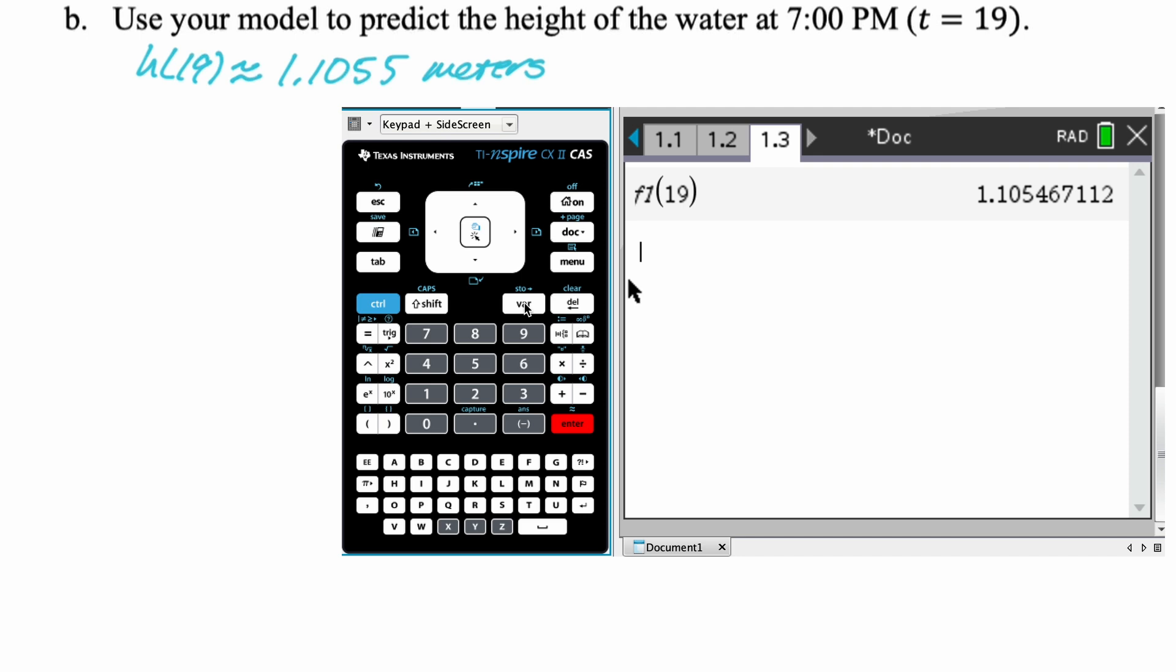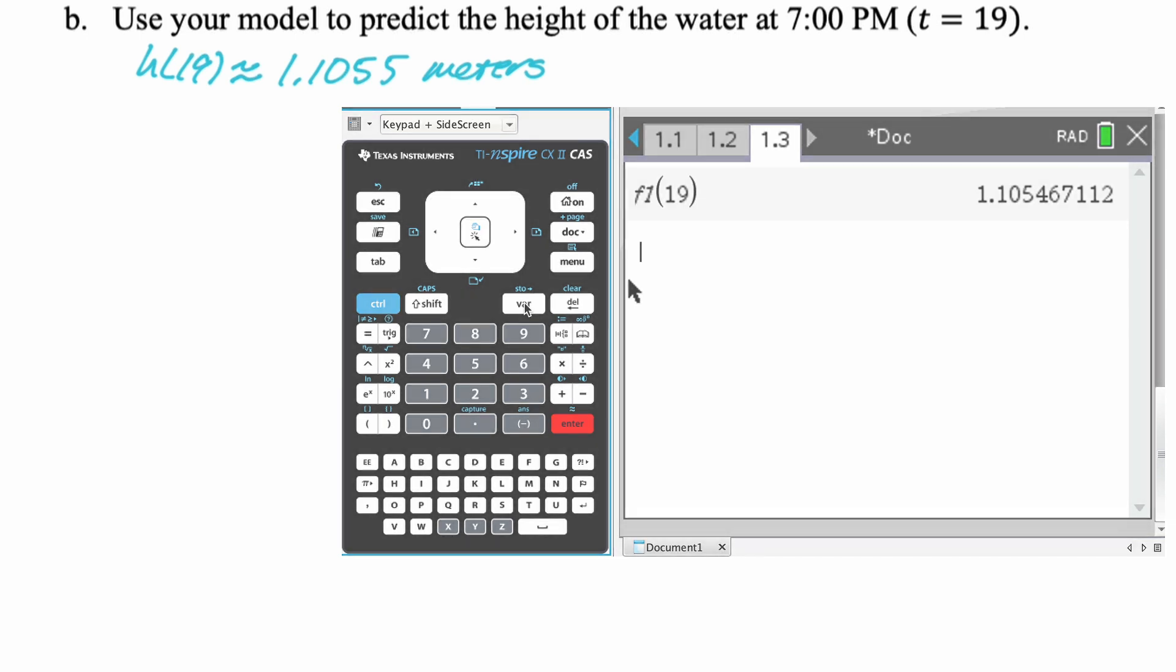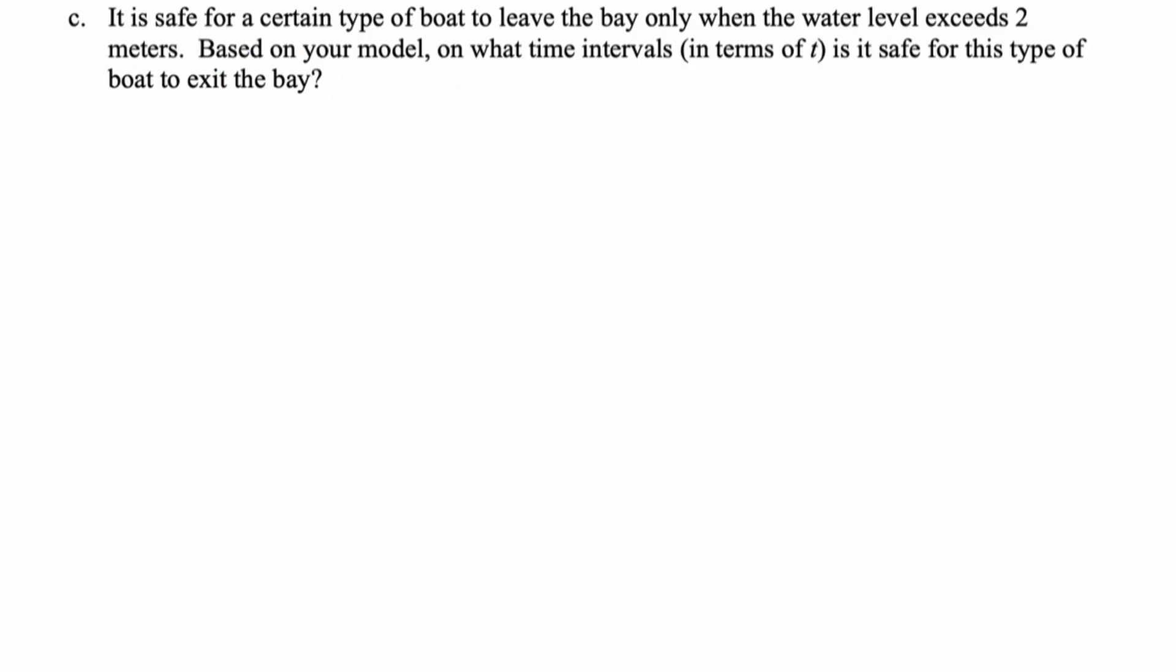And so we got H of 19 is approximately 1.1055 meters. Again, I went four decimal places. I mean, if it's multiple choice, just pick the correct option. All right, let's look at the next question. It is safe for a certain type of boat to leave the bay only when the water level exceeds 2 meters. Based on your model, on what time intervals, in terms of T, is it safe for this type of boat to exit the bay?